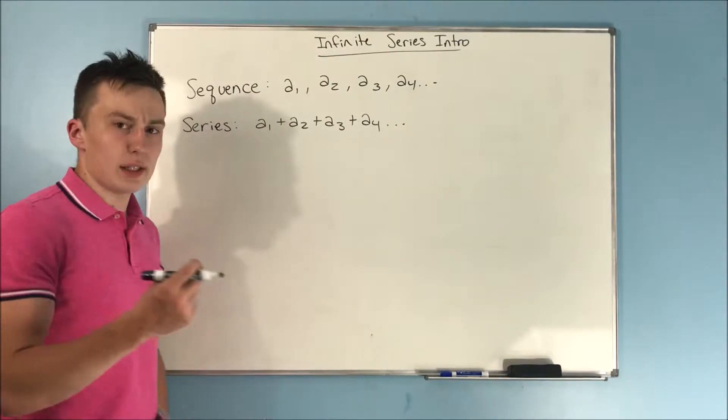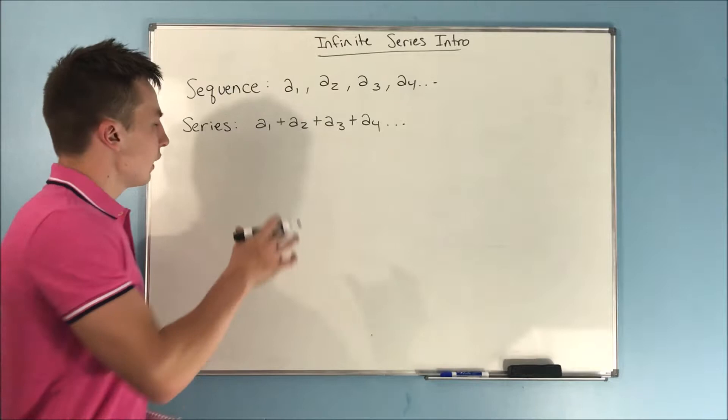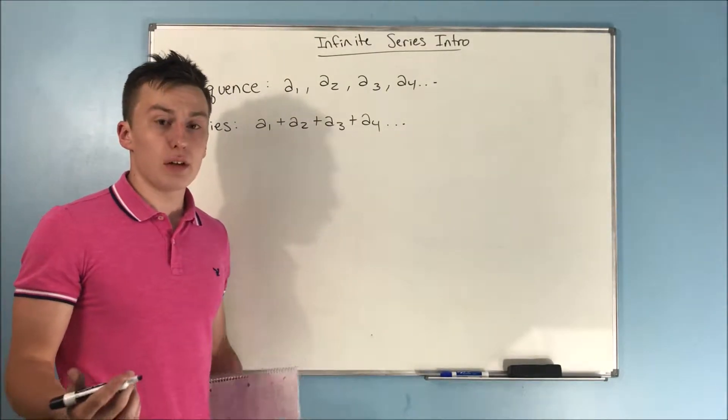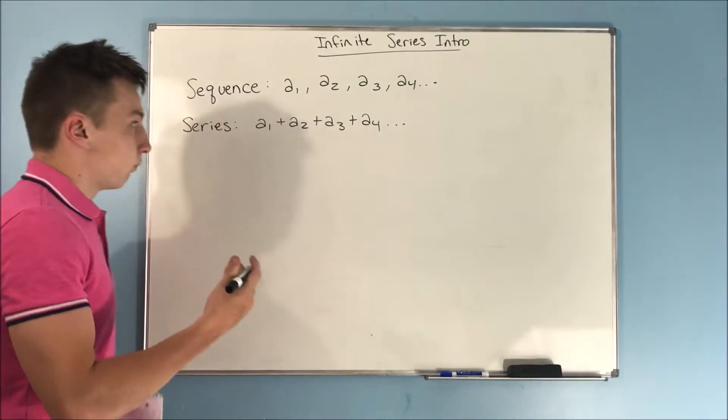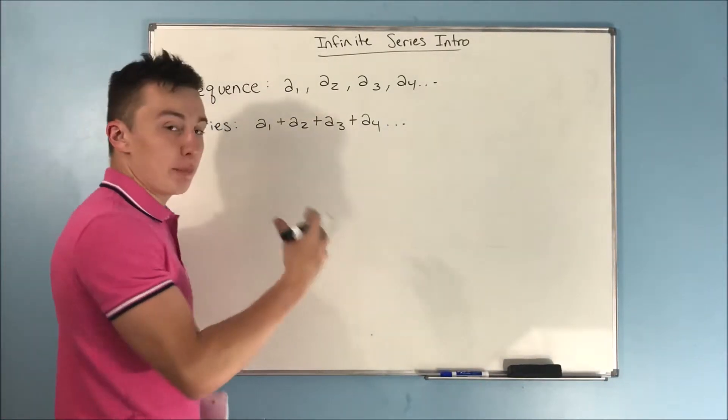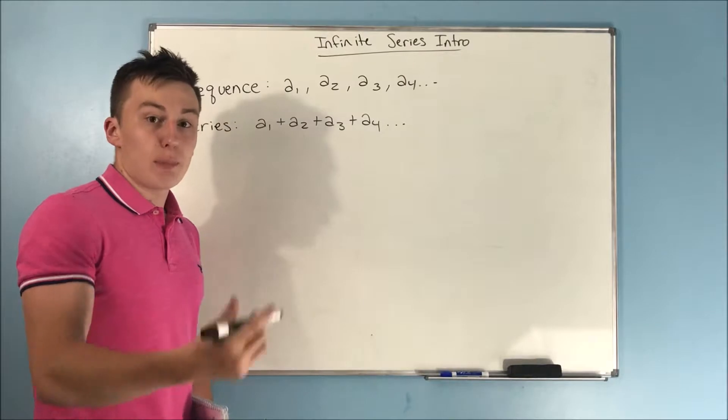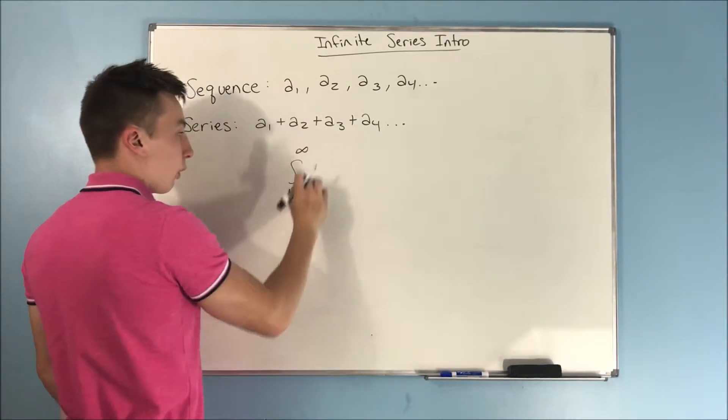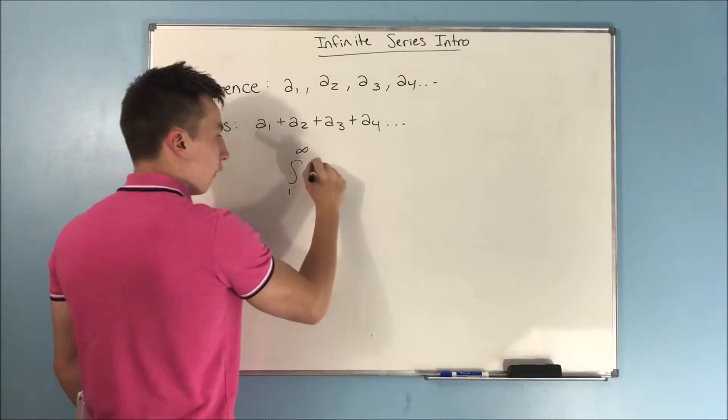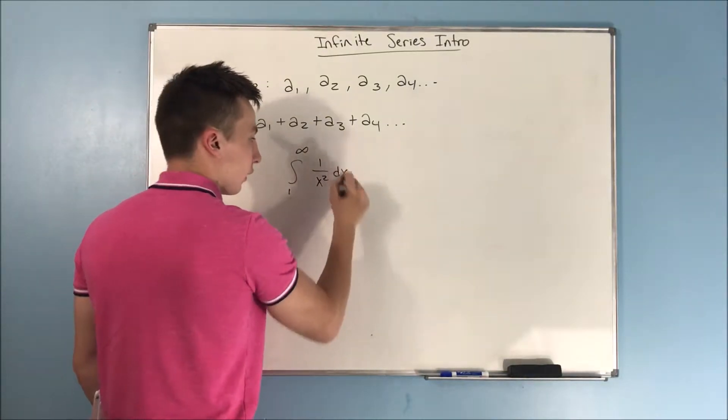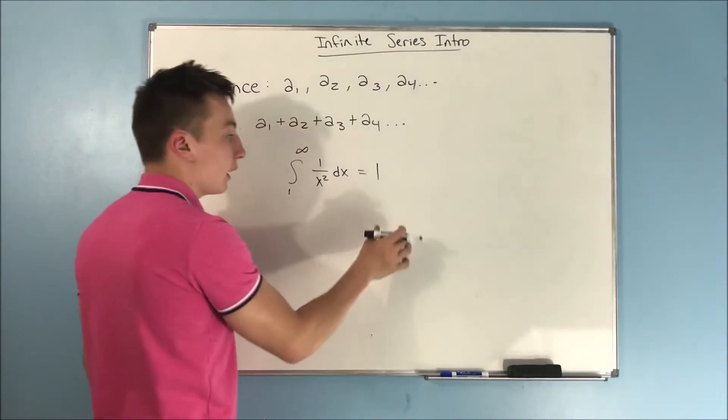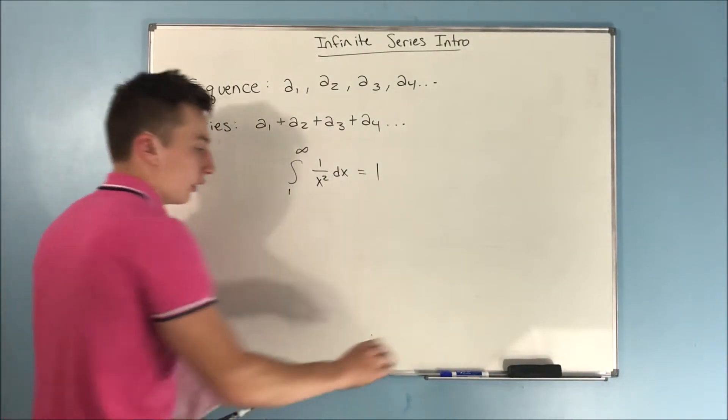Now, this may seem like an insane concept. How can you take the sum of an infinite number of terms and expect it to be anything other than infinite? So it can happen, and we've been doing it with improper integrals. We can bring up the integral from 1 to infinity of 1 over x squared dx. We found that to be equal to 1, right? It was convergent, meaning it had a finite answer.